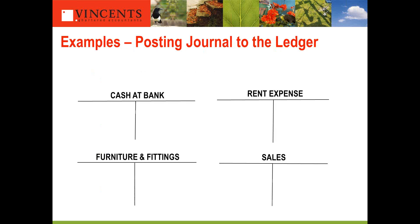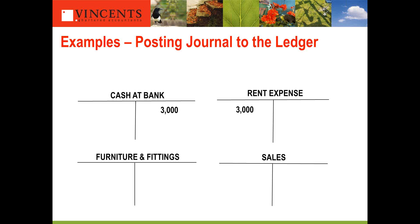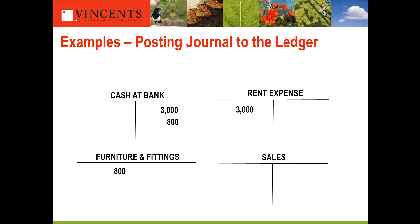Here's the example for those three journals posted through to the ledger. Remember — debit on the left, credit on the right. In the cash at bank account, the credit for rent goes on the right and rent expense goes on the left. The second journal — furniture and fittings — cash is credited on the right, furniture and fittings debited on the left. Last one — cash sale of $5,000: sales is credit in nature and goes on the right; cash at bank is debit in nature and goes on the left.